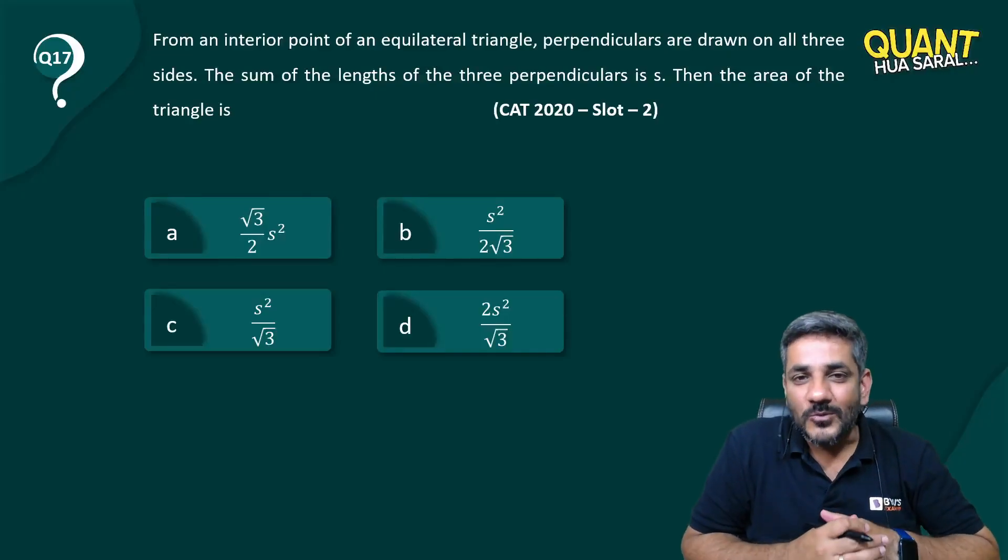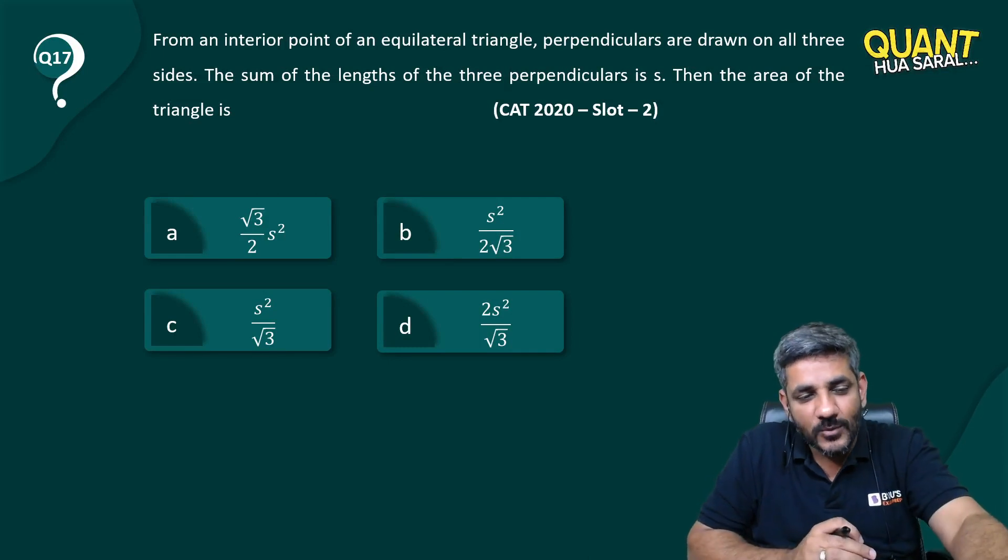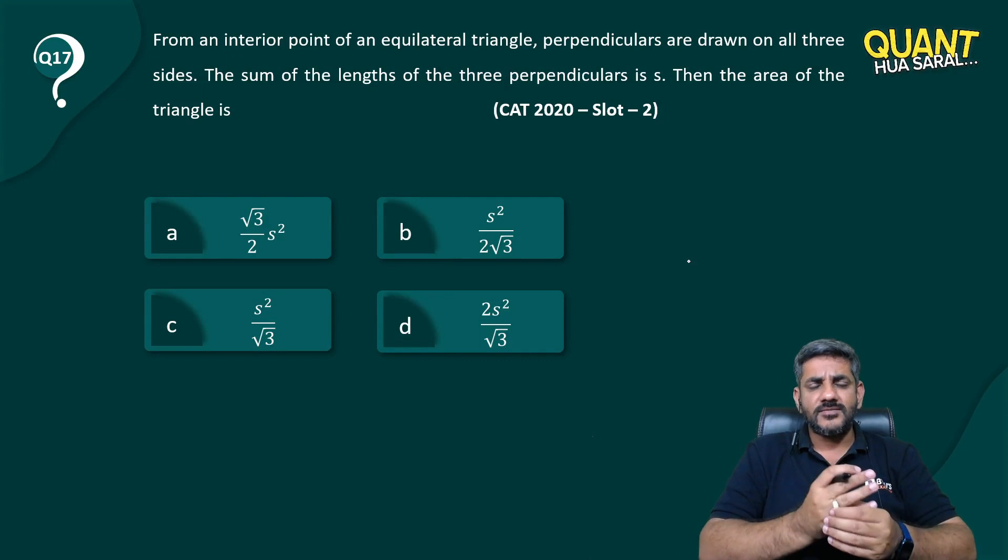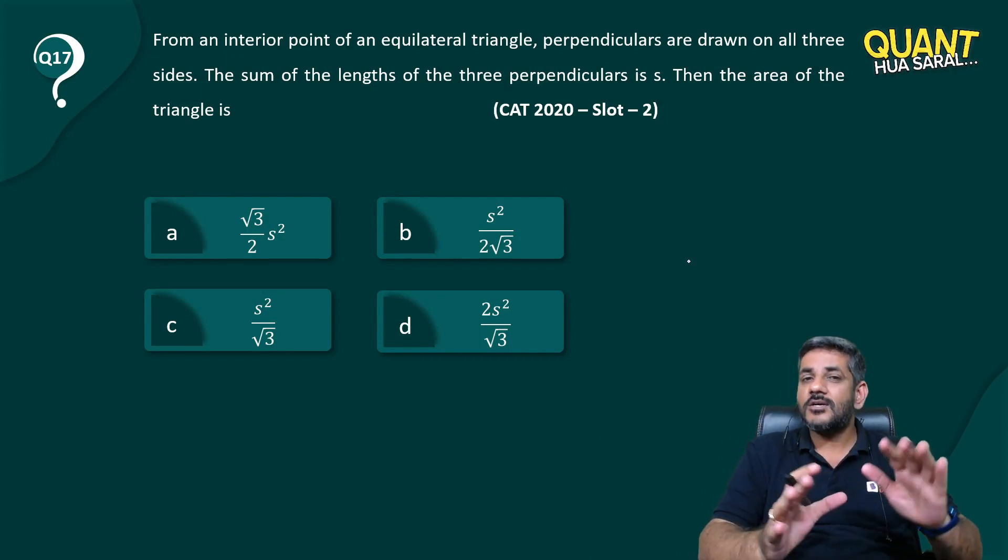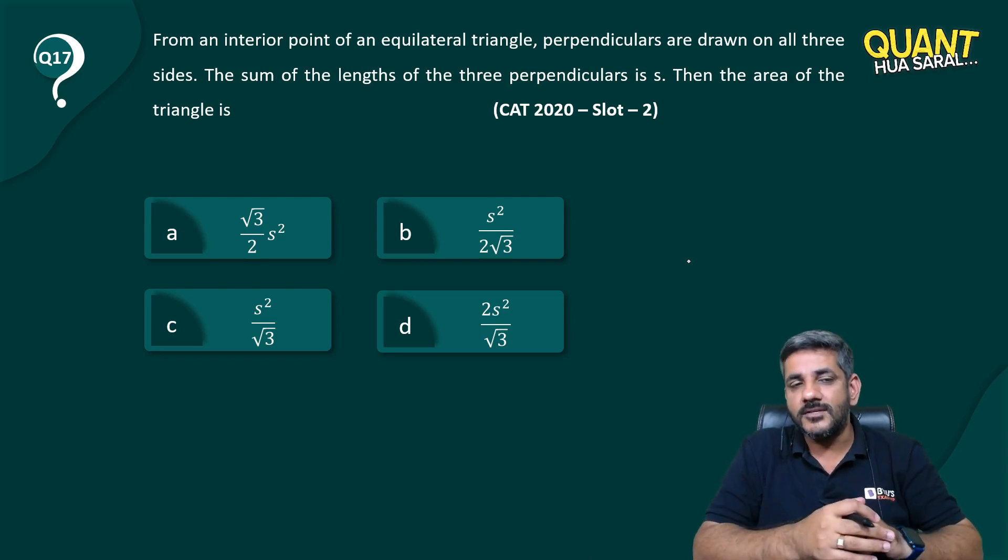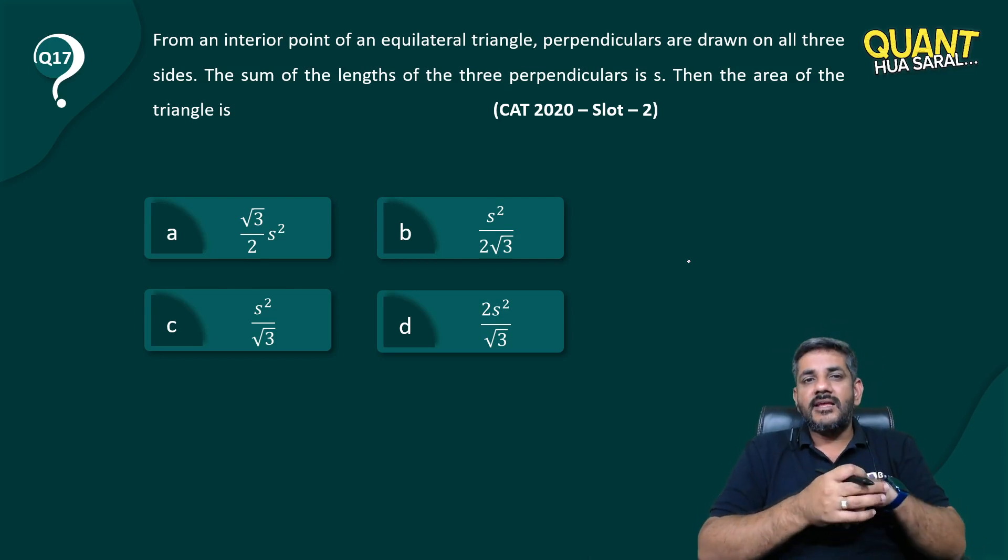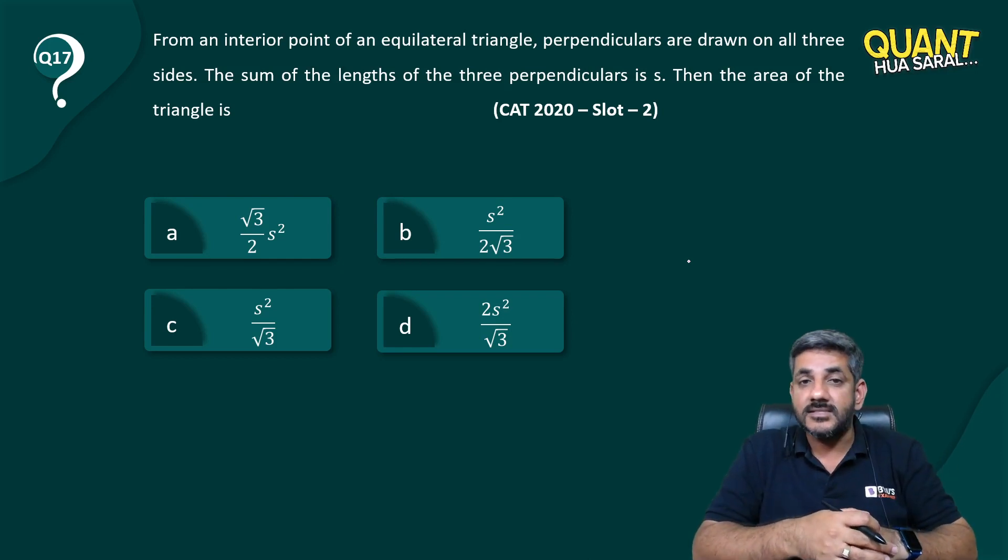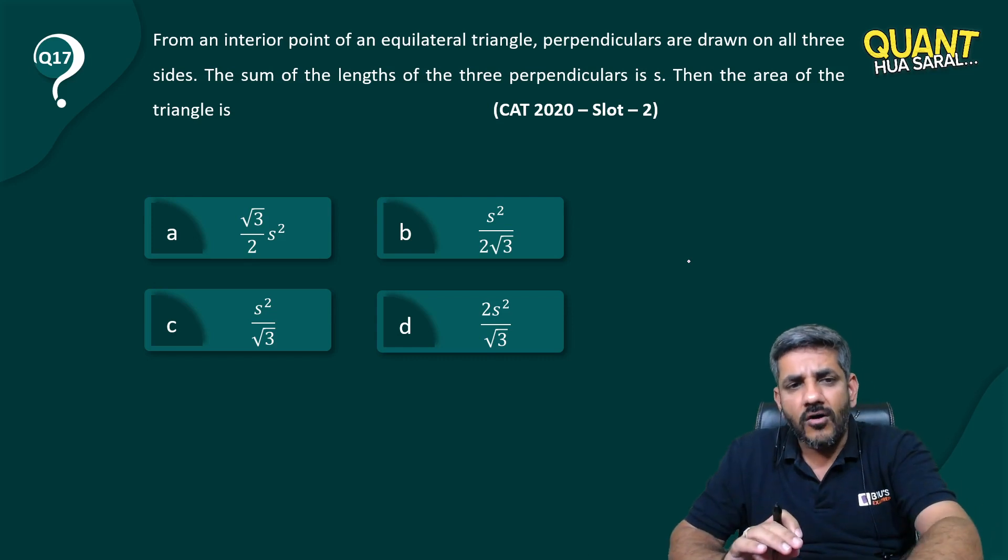Hello everyone, welcome to question number 17. Once again, a question from CAT 2020 Slot 2. Actually, many students asked for this question—sir, we found it difficult, so can you please discuss it? It's a question from geometry. I'm sure you would love the solution. From an interior point of an equilateral triangle, perpendiculars are drawn on all three sides. The sum of the lengths of the three perpendiculars is s. Then the area of the triangle is what?